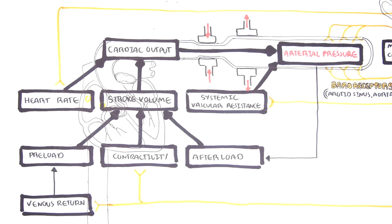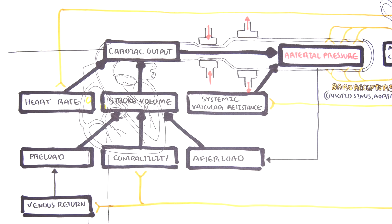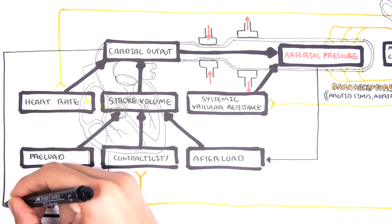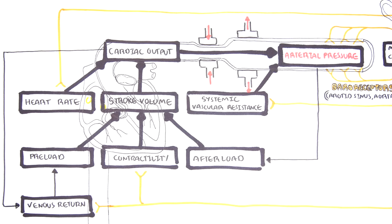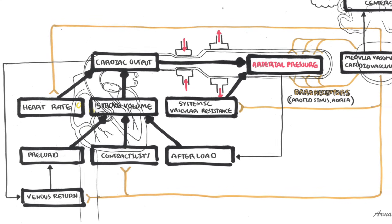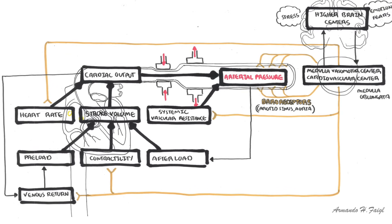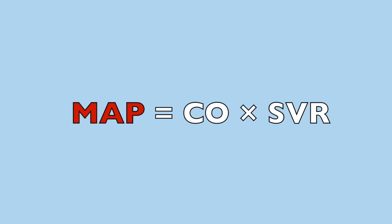Your cardiac output — the amount ejected by the heart in one minute — will also influence your venous return, how much blood will return to your heart. This simplified diagram shows the relationship between arterial pressure, cardiac output, the determinants of cardiac output, and the response from the medulla vasomotor center and the cardiovascular center. To recap: mean arterial pressure equals cardiac output multiplied by systemic vascular resistance.